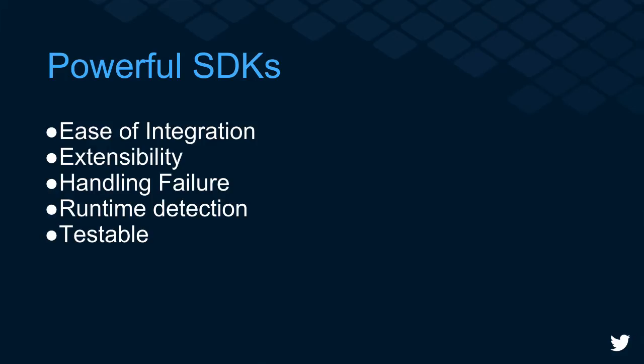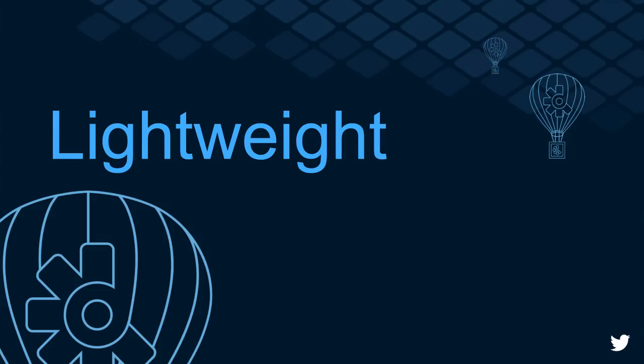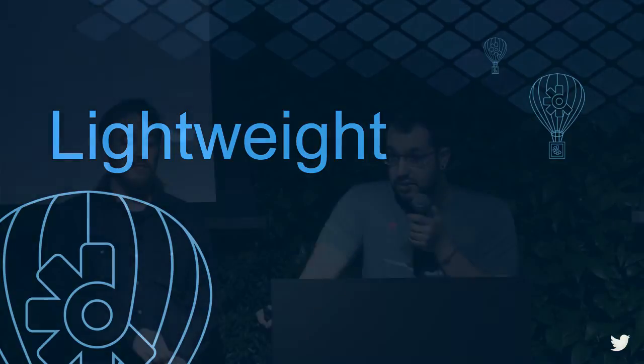We talked about the importance of easy integration, extensibility of the API, and runtime permissions. Now we're going to talk about how an SDK has to be not only powerful but also lightweight. During the process of building Fabric, we learned the importance of creating lightweight SDKs — and all these lessons can be applied to applications too. The important considerations for building a lightweight SDK are: binary size, watching out for method count, limiting network usage, encouraging modularity, and optimizing startup time.